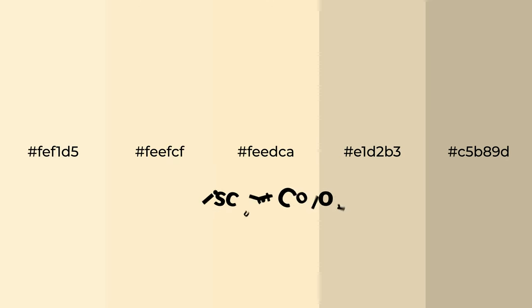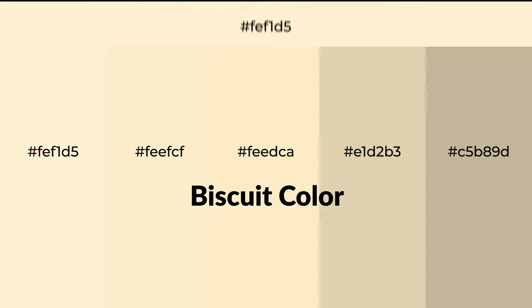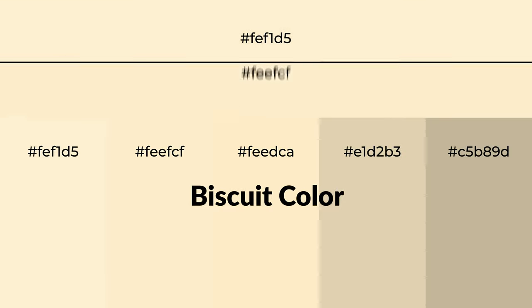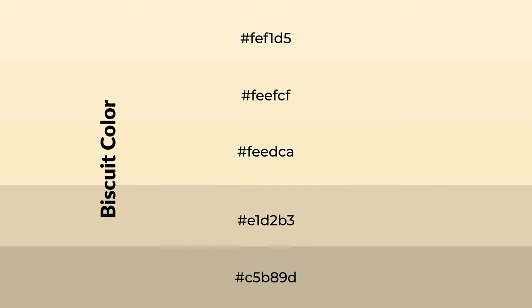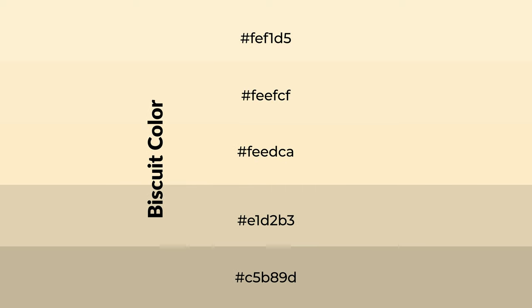Warm shades of biscuit color with brown hue for your next project. To generate tints of a color, we add white to the color. Tints create light and exquisite emotions. To generate shades of a color, we add black to the color.